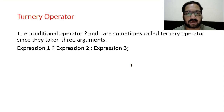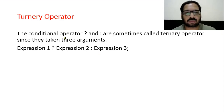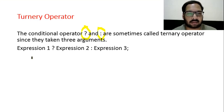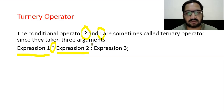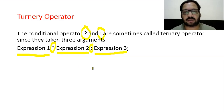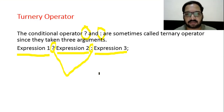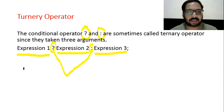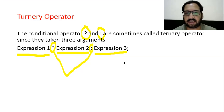Ternary operator was already discussed as conditional operator. We use two symbols: question mark and colon. The syntax uses three arguments: expression1, then ?, then expression2, then :, then expression3. So there are three operands and two operators — that's why it is known as ternary operator. Expression1 specifies the condition, expression2 the true part, and expression3 the false part.